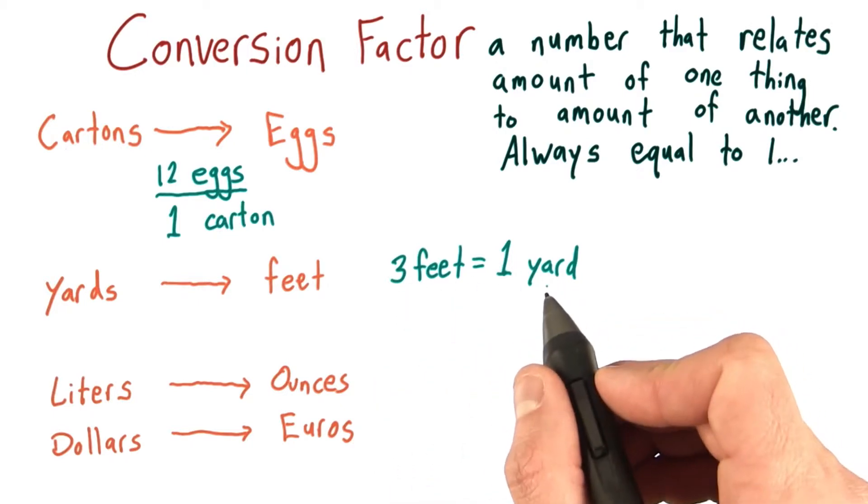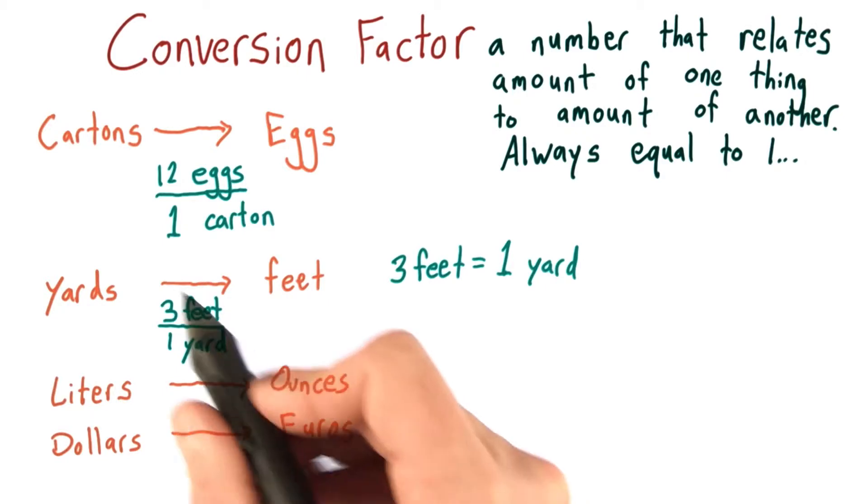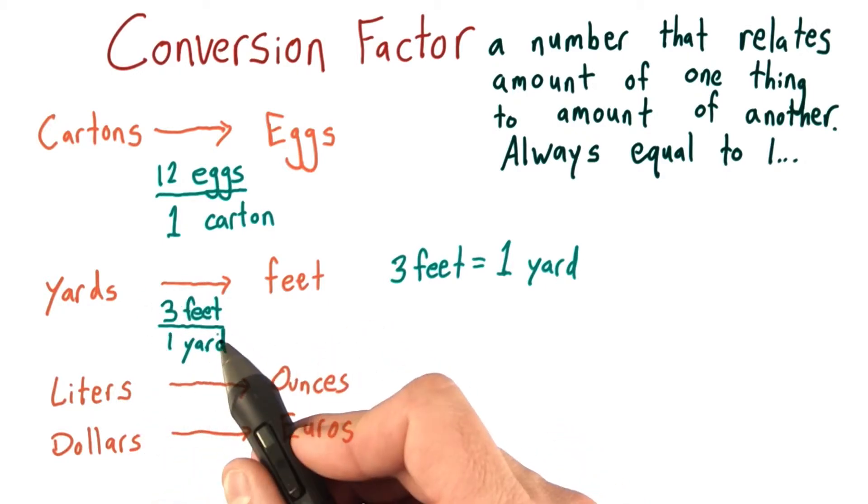But that's not quite our conversion factor. The conversion factor is 3 feet divided by 1 yard. And this is equal to 1 since these quantities are identical.